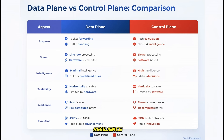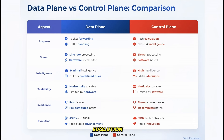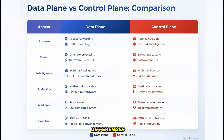In terms of resilience, the data plane is typically more stable — it keeps working even if the control plane has issues. The control plane is more complex and therefore more prone to problems, but it's also more adaptable when issues arise. Finally, in terms of evolution, the data plane evolves relatively slowly, with hardware changes taking years to develop and deploy, while the control plane evolves much more quickly, especially with software-defined approaches. Understanding these differences helps us design better networks.